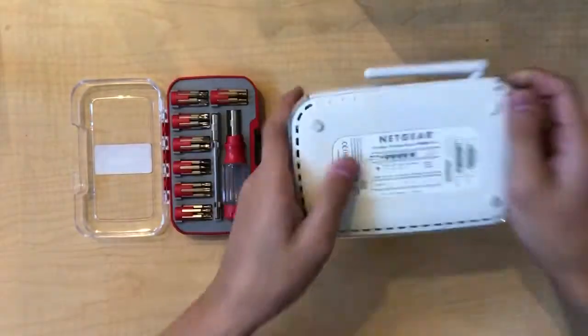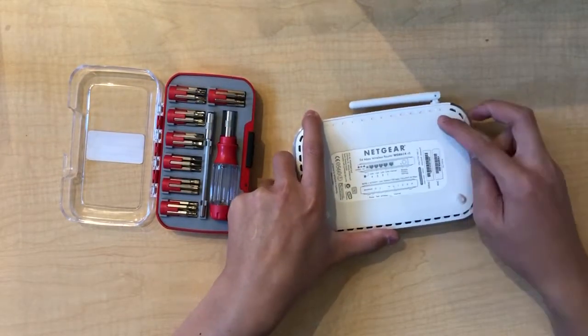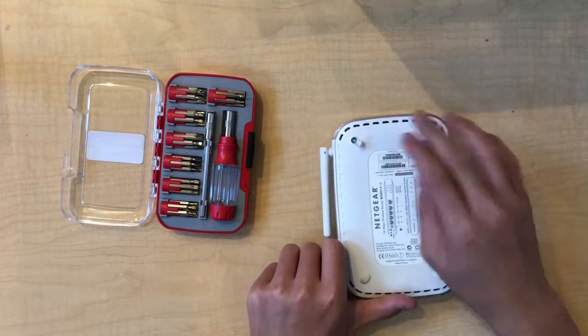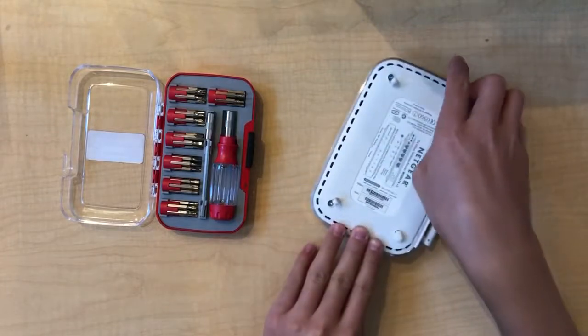So we're gonna take this one apart real quick. The first thing is to look under the foot pads to see if there are screws because there are no visible screws in the first place. So there are four underneath these foot pads.